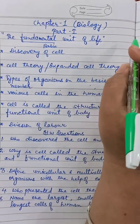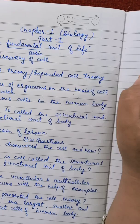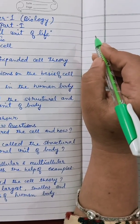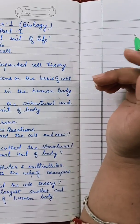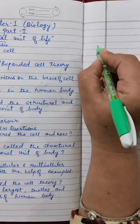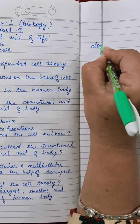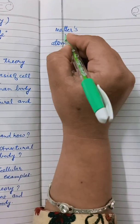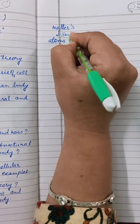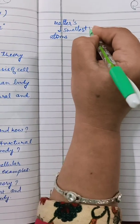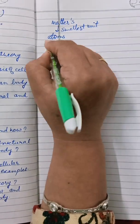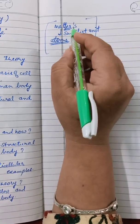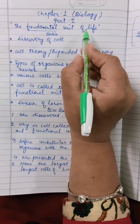Like in chemistry, you all have studied that if we see matter, all matter is made up of small identical units and those units are known as atoms. Atoms are the smallest unit of matter. Matter is non-living, and here we will be knowing about the fundamental unit of life.